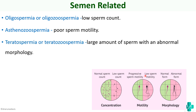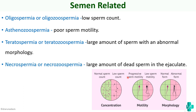Then teratospermia or teratozoospermia, which means a large amount of sperm with abnormal morphology — sperms are present but their shape is abnormal. Next is necrospermia or necrozoospermia, which means a large amount of dead sperm in the ejaculate. And azoospermia means zero sperm count — no sperms inside the semen. These are the different semen related conditions that can affect fertilizing capacity and lead to infertility.